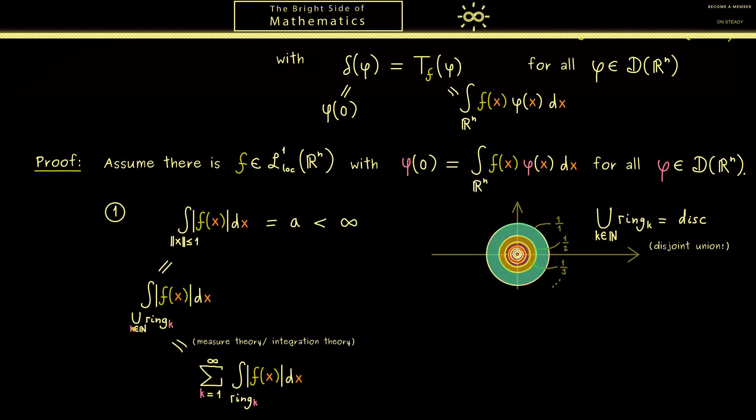We can simply write the whole integral as an infinite sum over the single integrals over the rings. Of course this whole procedure here is very natural but it's the thing we have to put in for the integrals. In the case you want to learn more about the details here you can simply watch my measure theory videos.